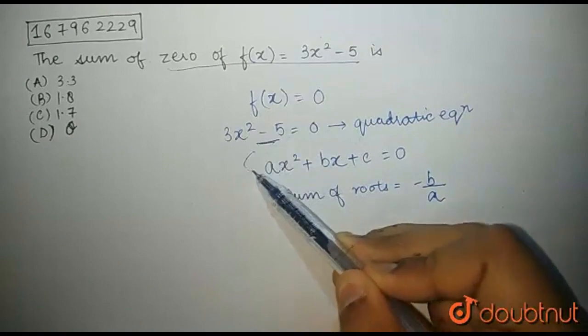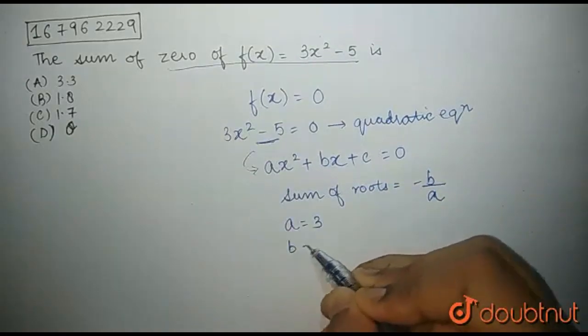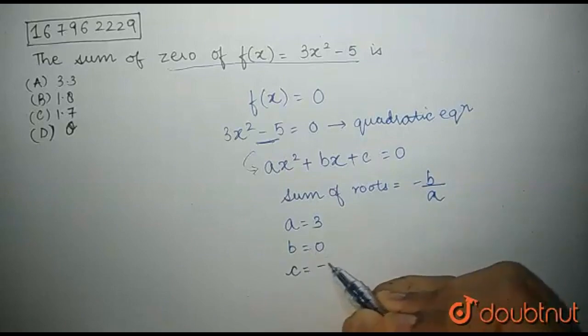Comparing this equation with the standard equation, we get a is equal to 3, b is equal to 0, and c is equal to -5.